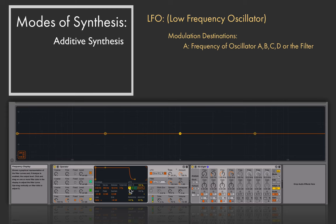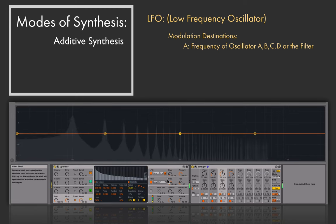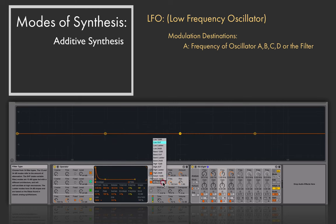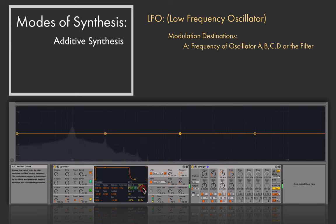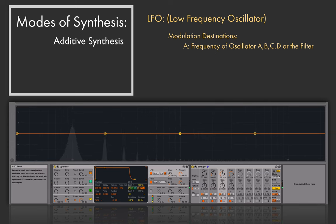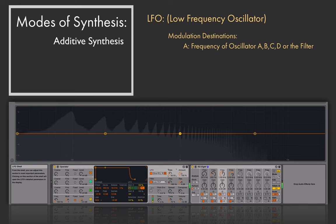We could route the LFO to all four oscillators, or turn it off from oscillator A and route it to the filter instead. Getting a saw wave gives us a more complex tone to work with. Jumping to the filter section and reducing the frequency, the LFO can then modulate that filter cutoff. Increasing the resonance makes the effect really audible as the LFO sweeps the filter at the specified rate.